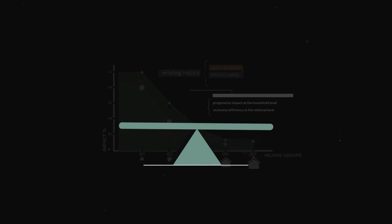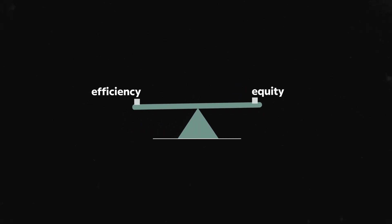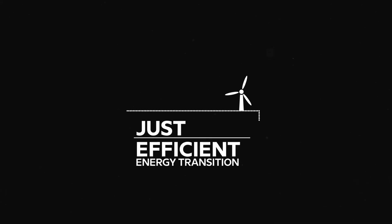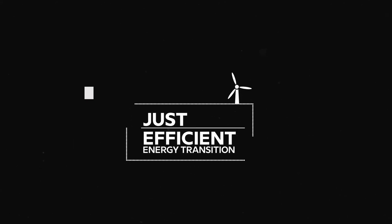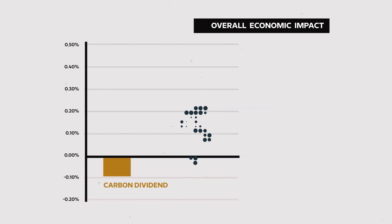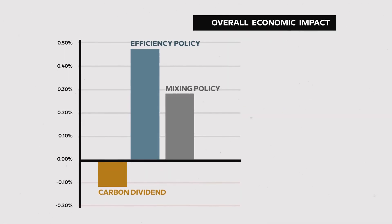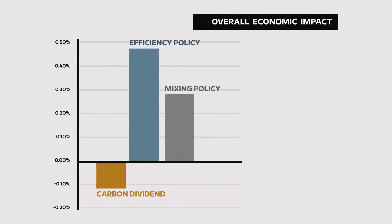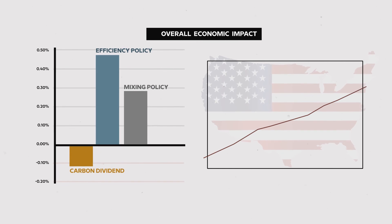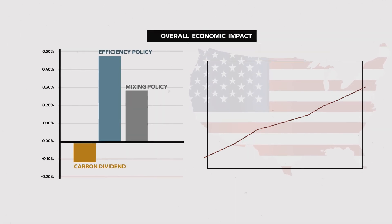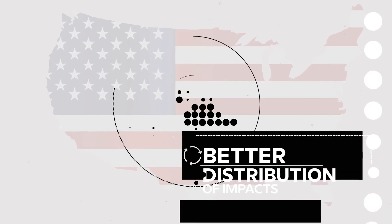Therefore, we can eliminate the potential trade-offs between efficiency and equity, and promote a just and efficient energy transition. To sum up, our study demonstrates that it is possible to introduce ambitious climate policies in the US while ensuring a just energy transition that does not jeopardize economic growth. Our best chance of achieving a low-carbon economy goes hand-in-hand with designing policies that are effective in promoting a better distribution of impacts.